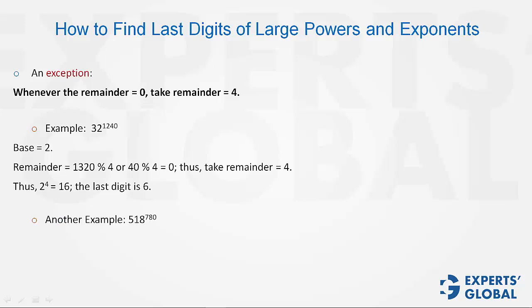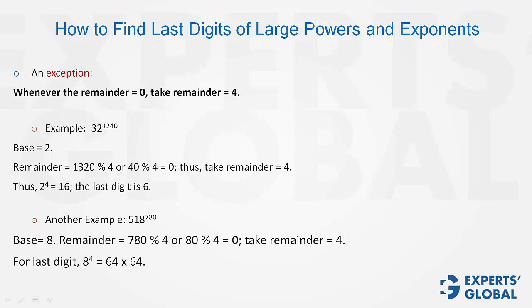One more example. Step 1: the base is 8. Step 2: the remainder is 0, so we take it as 4. Step 3: 8 raised to power 4. The last digit is therefore 6.